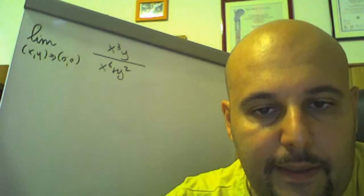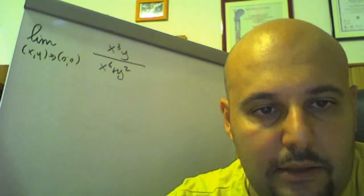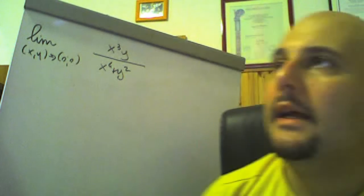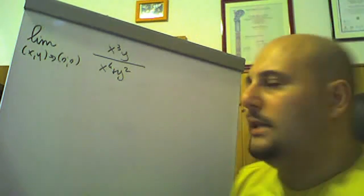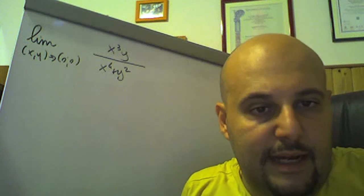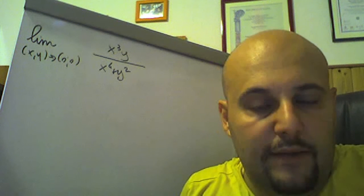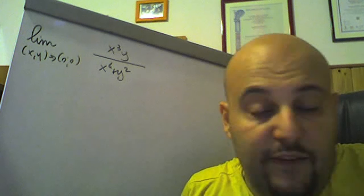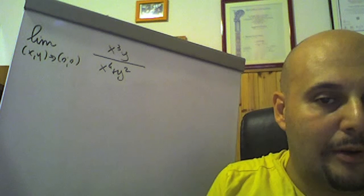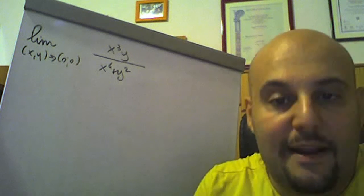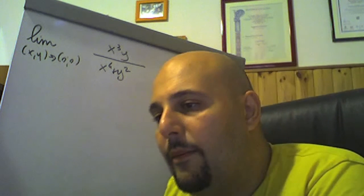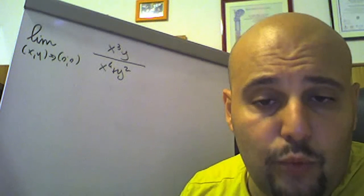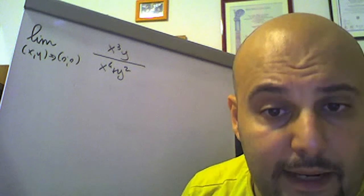Let's solve this limit: the limit as (x,y) tends to (0,0) of x³y / (x⁴ + y²). We can use the necessary conditions to verify whether the limit exists or not, but it's better to do so when we are almost sure the limit doesn't exist. Let's use instead the Squeeze Theorem — the theorem of the two carabinieri.